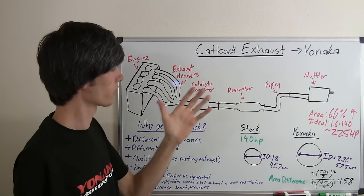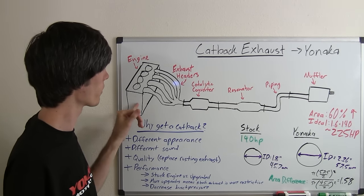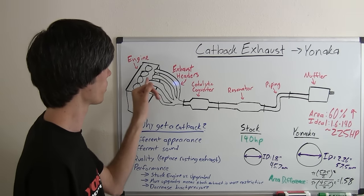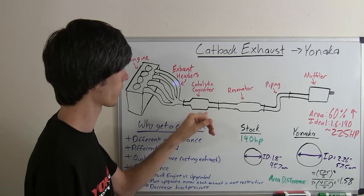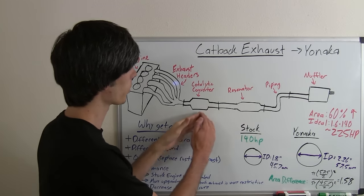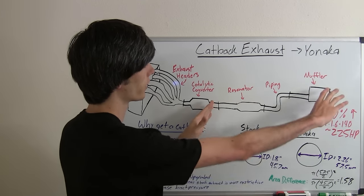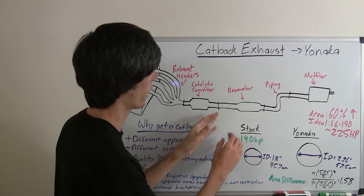So a cat-back exhaust, let's go over what it is first. We've got our engine, and from the engine the exhaust heads to the exhaust headers and then to the catalytic converter. Anything past this catalytic converter is considered the cat-back, hence back from the cat.